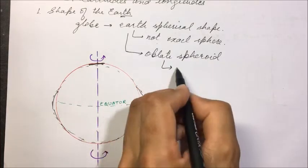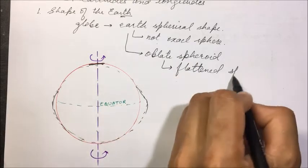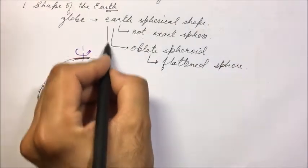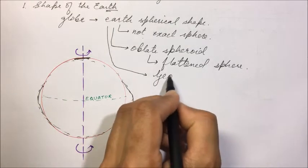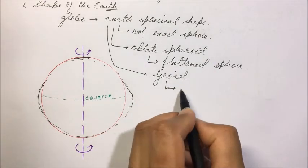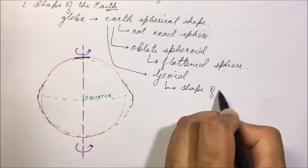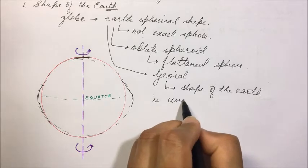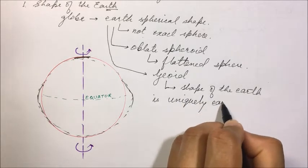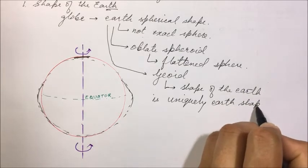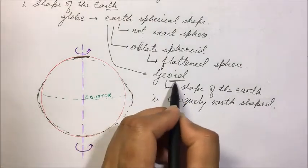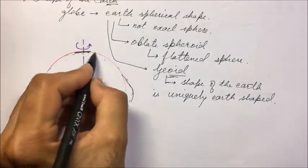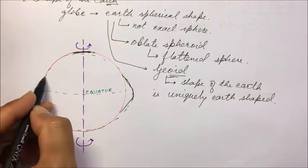That means it is a flattened sphere. Today the earth is considered a geoid. What does it mean? It means that the shape of the earth is uniquely earth-shaped — we have defined the new term 'geoid' for this. At the poles it gets slightly flattened, and at the equator it gets slightly bulged.